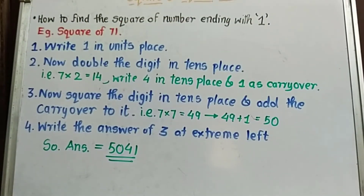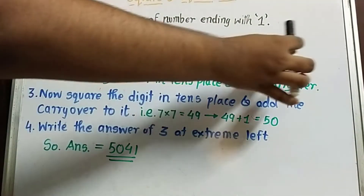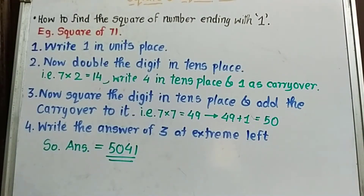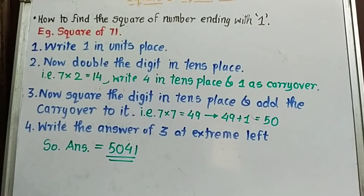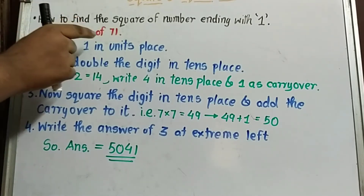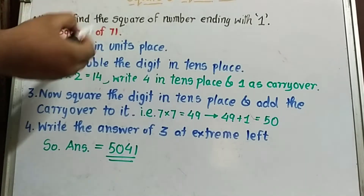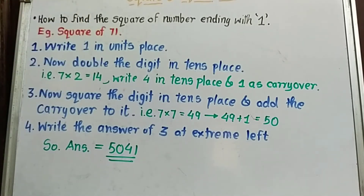There is a technique to find the square of a number ending with 1. Besides the 25 squares we have to remember, if they give a larger number — for example 71, which is larger than 25 — how do we find the square of 71? There is a technique for this.